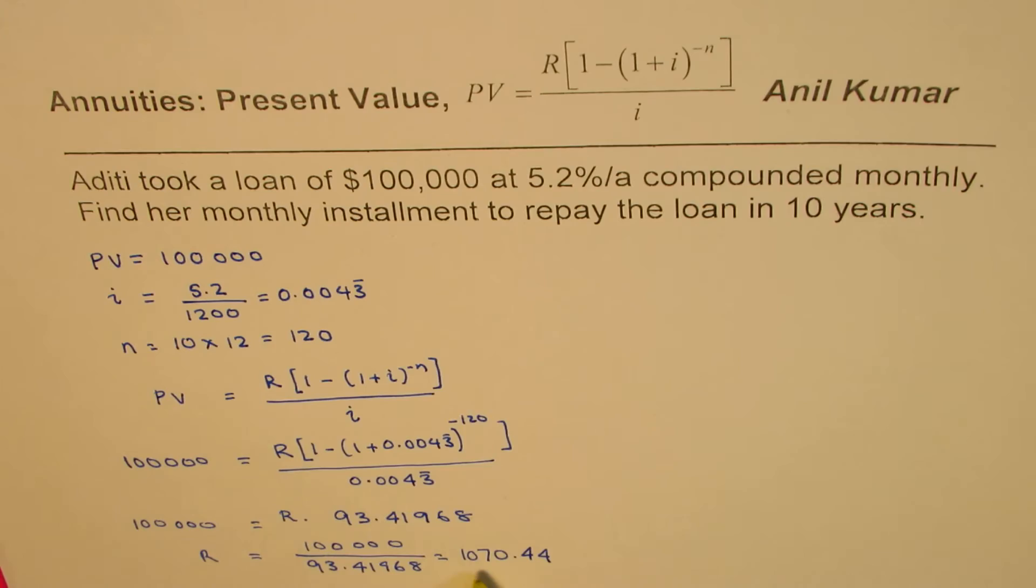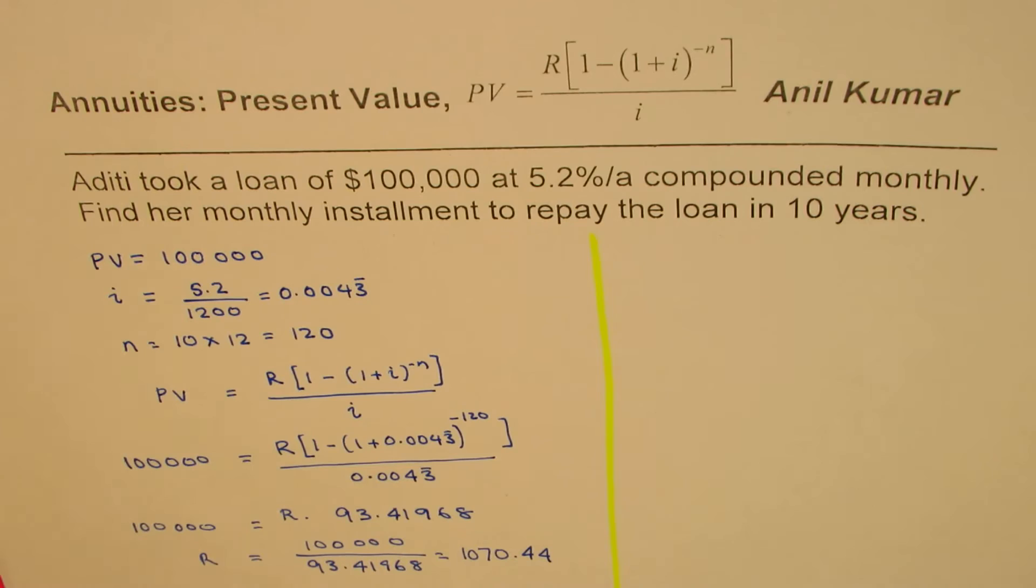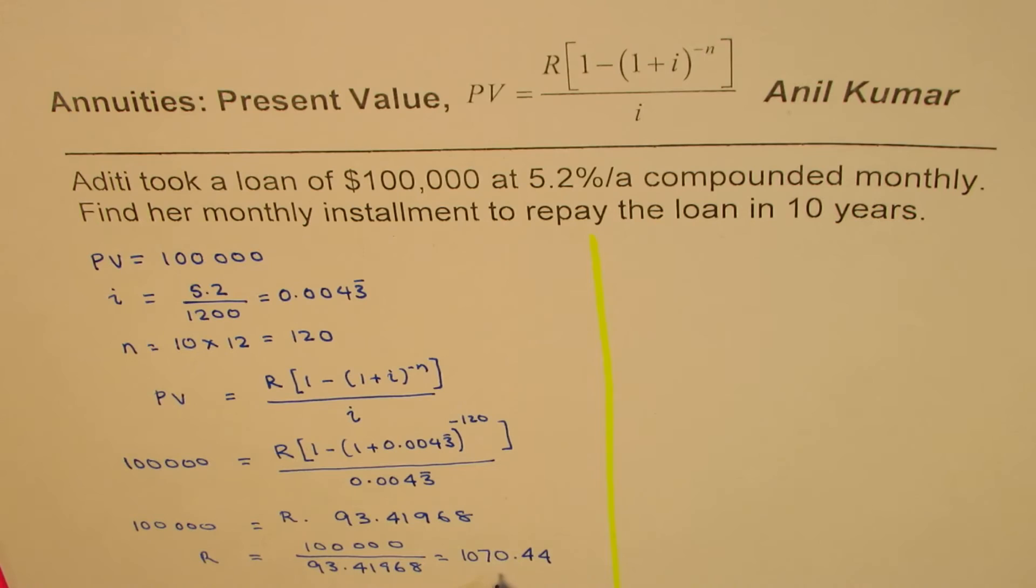So every month she should be paying $1,070.44 to repay this loan in 10 years. As an exercise, you can also find the interest she pays on this loan. Let's calculate this also. Now find interest.